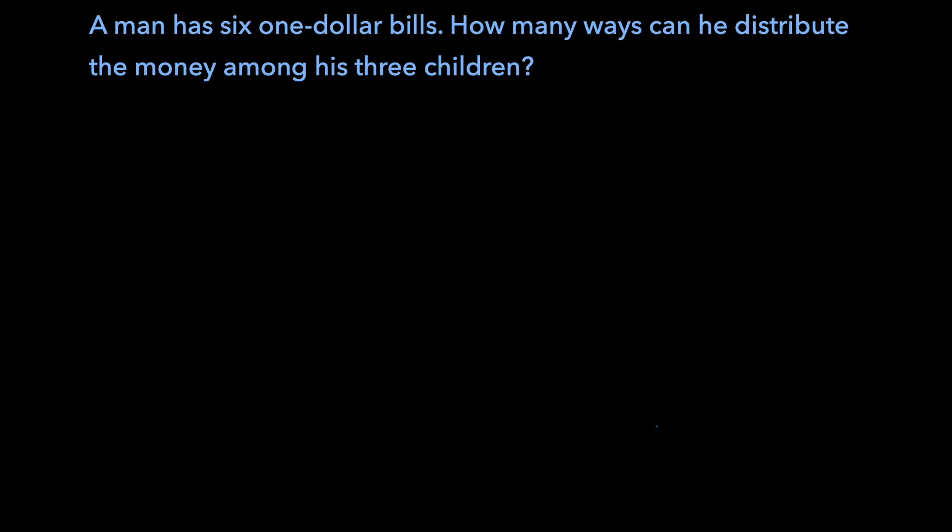First things first, let's just consider some of the possible ways the money can be distributed. So if we have the three children, C1, C2, and C3, the man could just choose to give all of the money to one of his children and nothing to the other two.